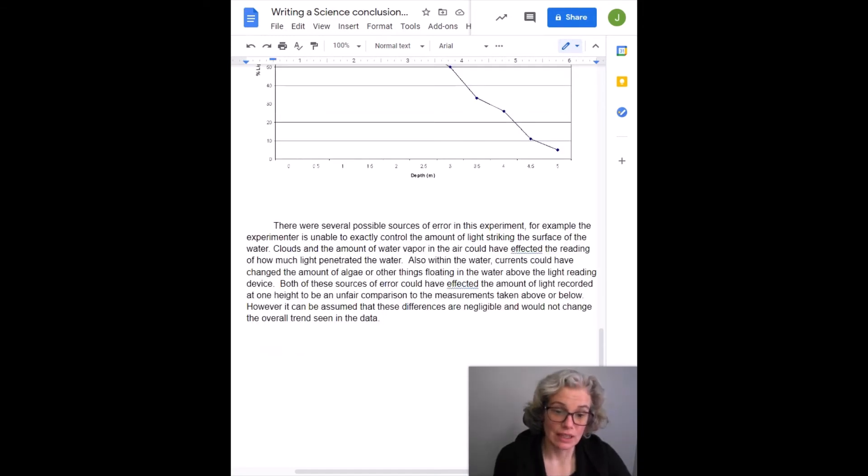So I wrote: Clouds and the amount of water vapor in the air could have affected the reading of how much light penetrated the water. Also, within the water, currents could have changed the amount of algae or other things floating in the water above the light reading device. Both of these sources of error could have affected the amount of light recorded at one height to be an unfair comparison to the measurements above or below. However, it can be assumed that these differences are negligible and would not affect the overall trends seen in the data.